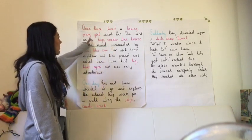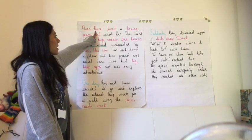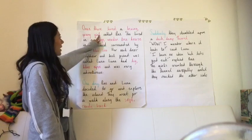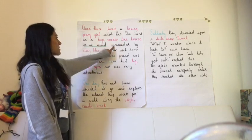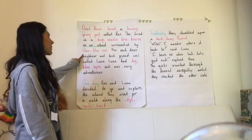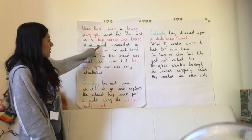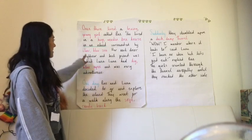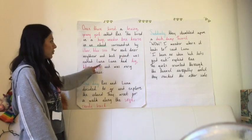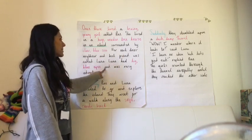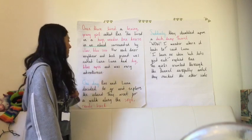Once there lived a loving young girl called Ray. So 'once there lived' in red — that was my story opener. And 'loving young girl' — that was my noun phrase. She lived in a huge wooden tree house on an island surrounded by clear blue water. 'Huge wooden tree house' is my noun phrase, 'on an island' tells you the setting, and 'clear blue sea' is another noun phrase. Her next door neighbour and best friend was called Luna. Luna had big blue eyes and was very adventurous — 'big blue eyes' is my noun phrase and adjective description.